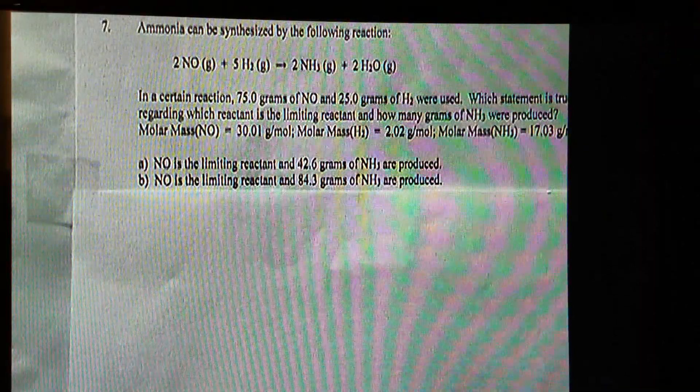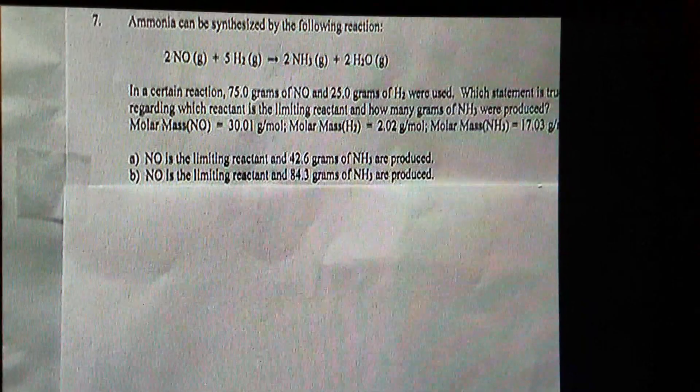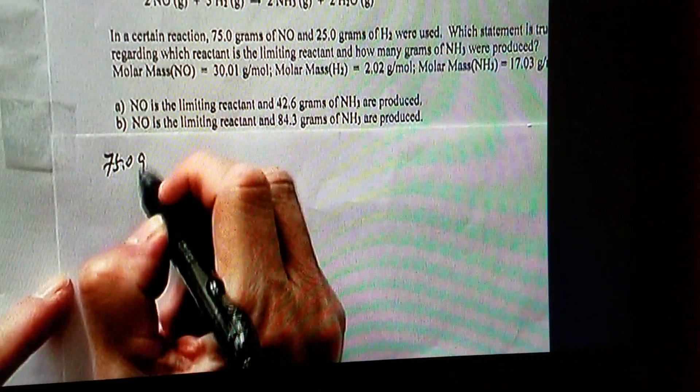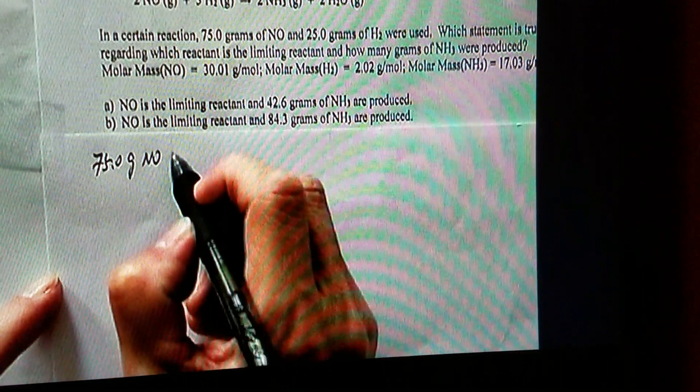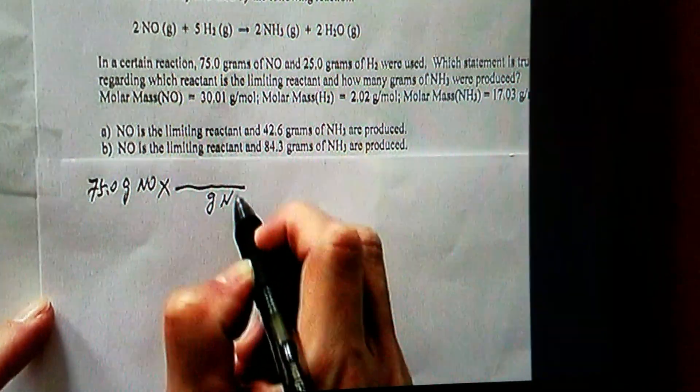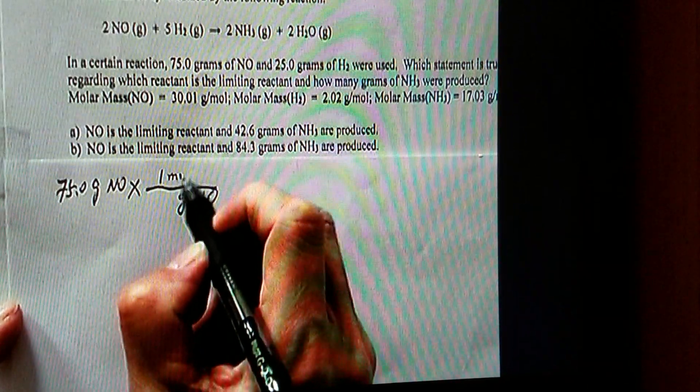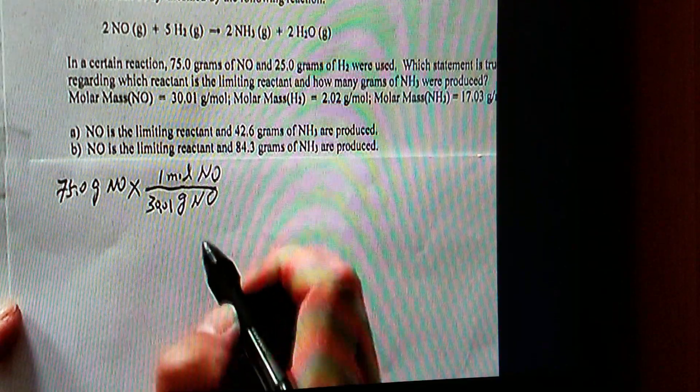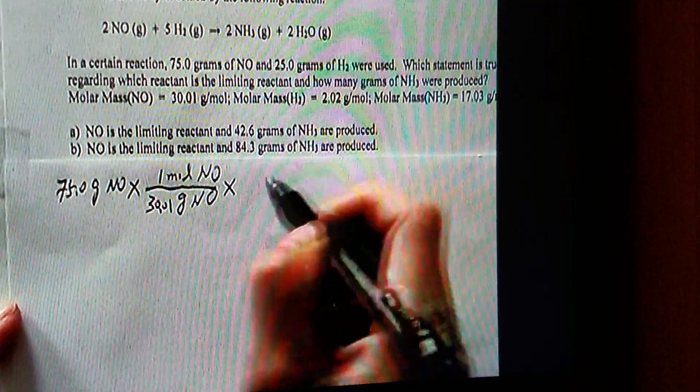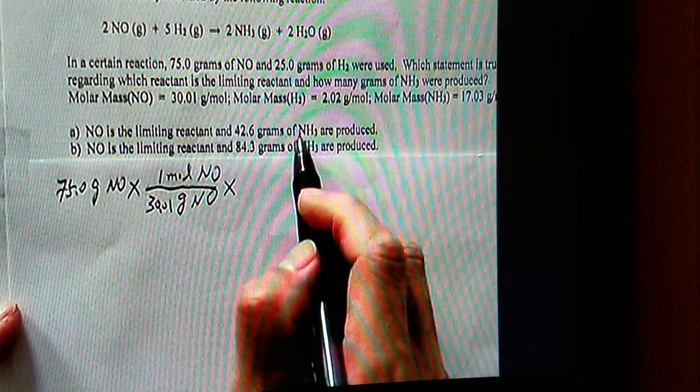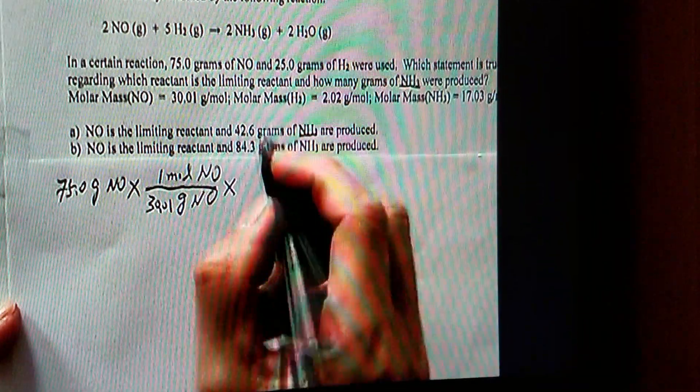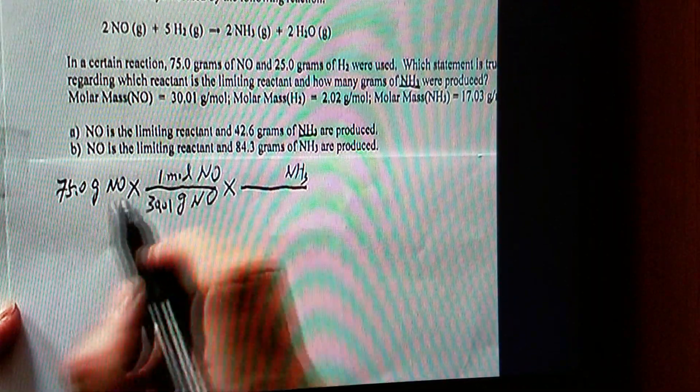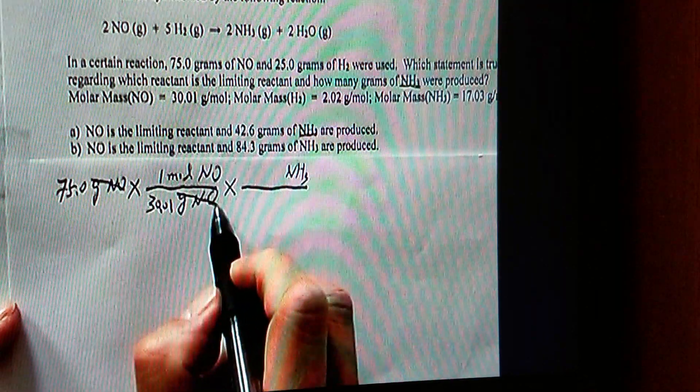We'll put nitrogen monoxide first. So we have 75 grams of nitrogen monoxide. Convert from grams of nitrogen monoxide to moles of nitrogen monoxide using the molar mass, 30.01. Now we'll convert to the product that is asked, which is NH3. Grams of NO are cancelled.